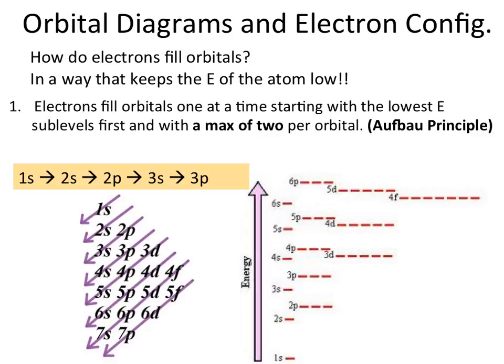Some of you may have seen the filling diagram where your 1s gets filled, then your 2s, then your 2p, your 3s, your 3p, your 4s, etc. Some of you may have learned the filling procedure based on reading the periodic table like a book — going from left to right: 1s orbitals get filled first, then 2s and 2p, then 3s, then 3p, then 4s, then 3d, etc. This is the Aufbau principle, and there is a maximum of two electrons per orbital.